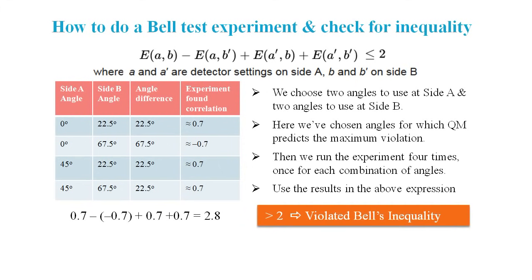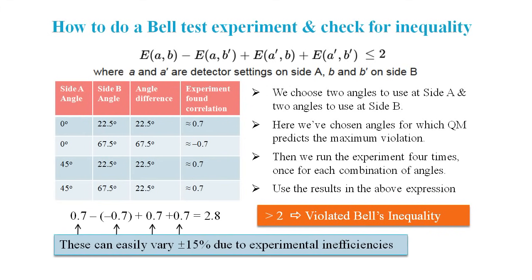It's important to note that in real experiments, we don't get anywhere close to the correlations predicted by quantum mechanics. This is all put down to experimental inefficiencies.